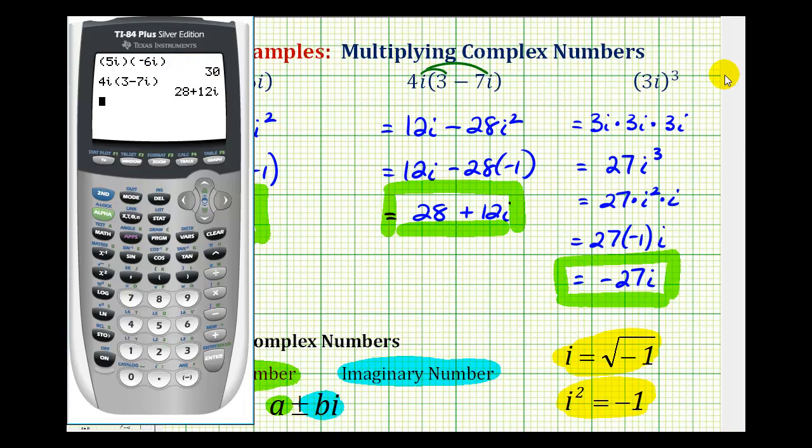And then, for our third example, we have 3i raised to the third. Here's the exponent key, and this is raised to the third power, which verifies our third product. Okay, I hope you found this helpful.